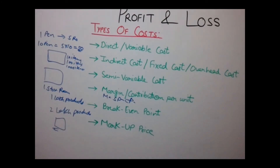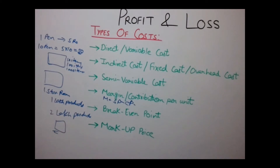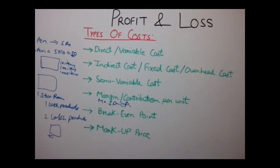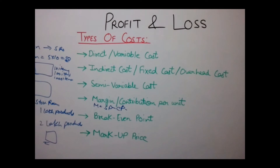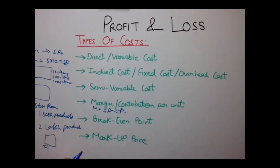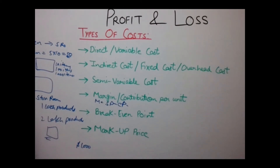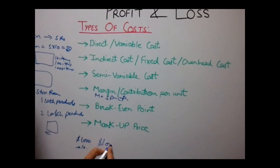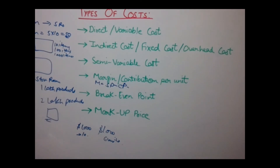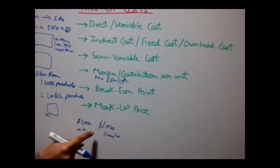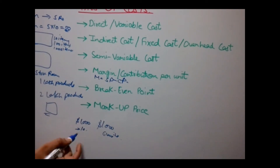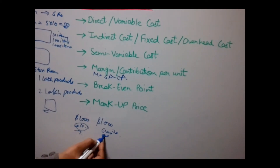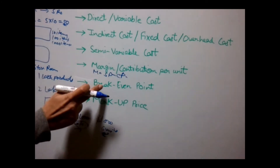Break Even Point is not a type of cost but a concept used in these types of questions. It is the point where your total cost spent in manufacturing equals your total selling price. For example, if you spent Rs.1000 manufacturing 10 units and earned Rs.1000 by selling 6 units, you have no loss and no gain. The point where cost price equals the amount earned is known as the Break Even Point.